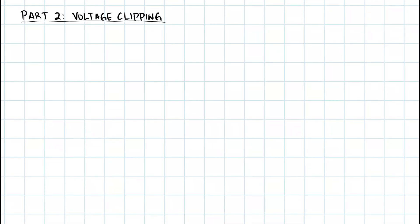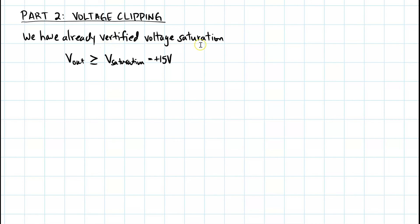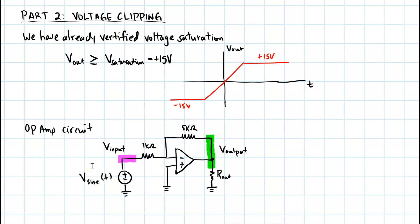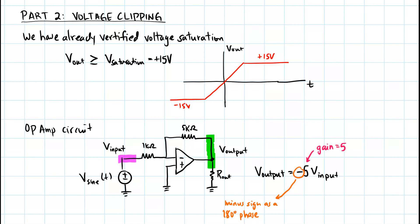Part 2: Voltage Clipping. In lab 6, we already verified voltage saturation — if the output voltage exceeds the saturation voltage of 15 volts, the output is railed, meaning it gets clipped at plus or minus 15 volts. Now we do this with an AC circuit using an inverting op amp. The output voltage equals minus five times V-input: the minus sign indicates a 180-degree phase change, and the gain is five. So when five times the input exceeds 15 volts, we expect clipping.